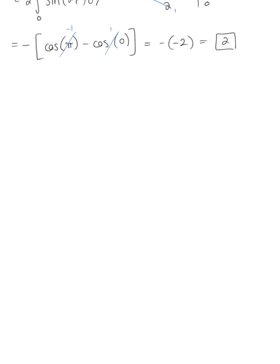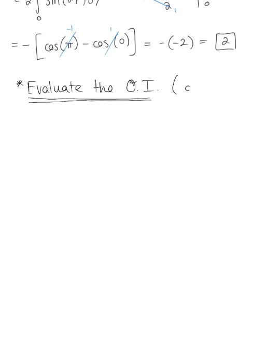We can now evaluate the outer integral with respect to theta. Our last integral is from 0 to 2 pi of 2 d-theta, which is 2 theta from 0 to 2 pi, giving us a final answer of 4 pi.